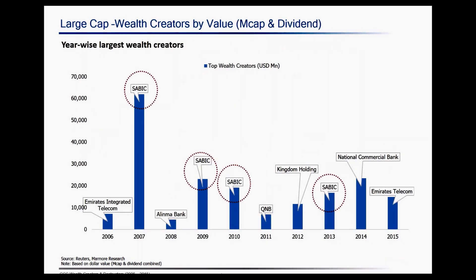In this slide, we have identified the top performers or top wealth creators in the large cap segment on a year-by-year basis. We can see that SABIC is appearing almost four times in this list during the 2006 to 2015 period — specifically in 2007, 2009, 2010, and 2013. These are the years when oil prices were pretty high, and because petrochemical product prices are linked to oil prices, SABIC was able to generate high returns. SABIC has consistently appeared as the top wealth creator among large cap for four different years.